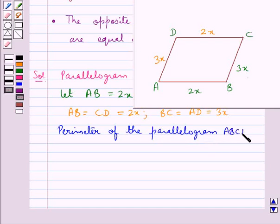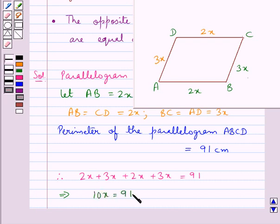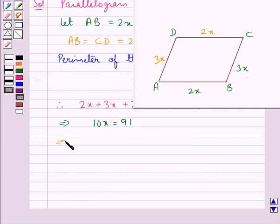So we have the perimeter of the parallelogram ABCD is given as 91 cm. That is the sum of the parallelogram is equal to 91 cm. So we have 2x plus 3x plus 2x plus 3x is equal to 91 cm. So we get the value of x by dividing both sides by 10. So we have x is equal to 9.1 cm.